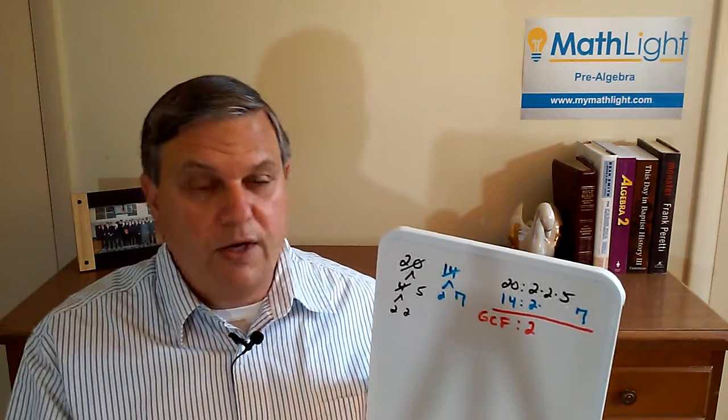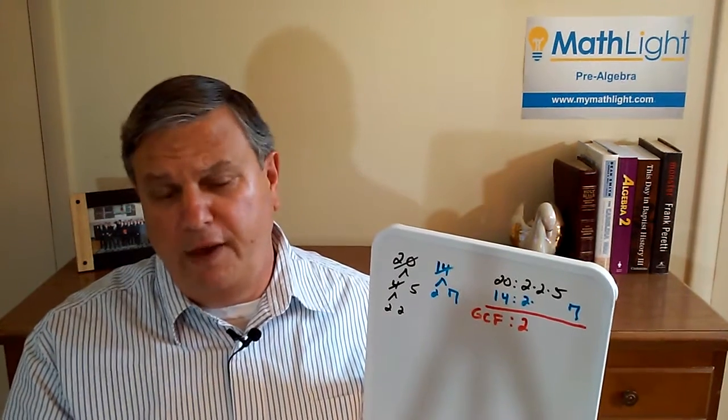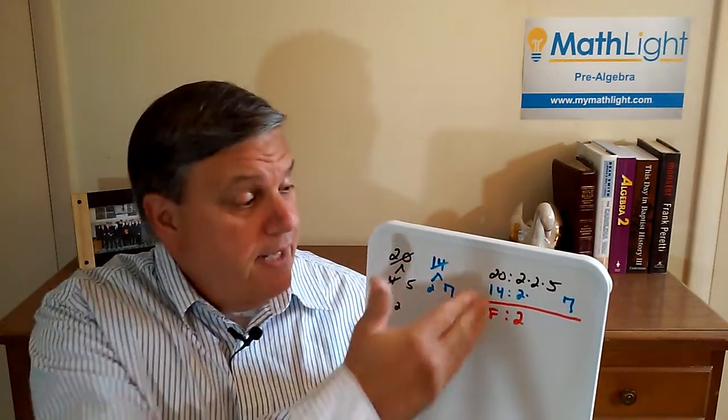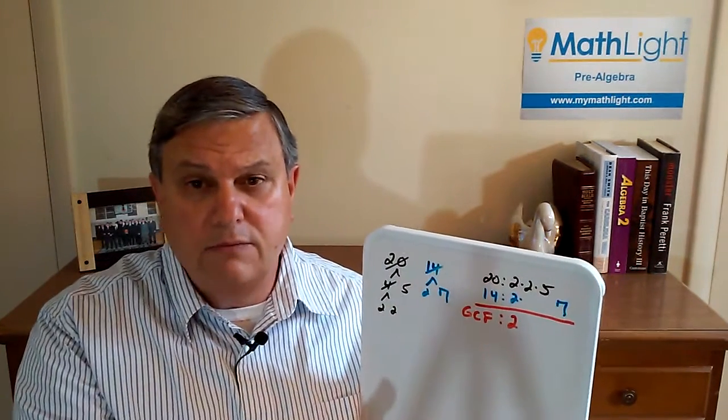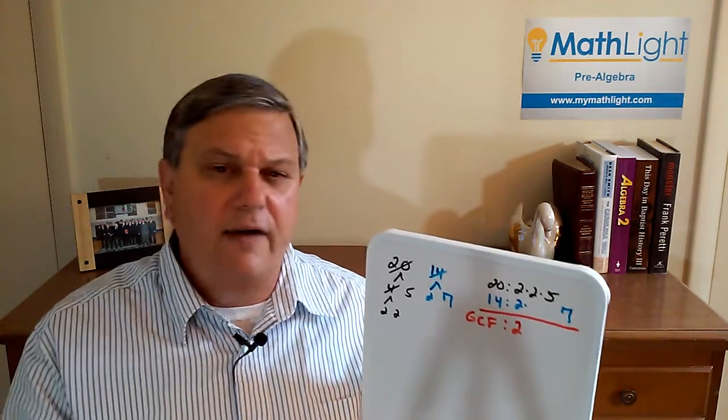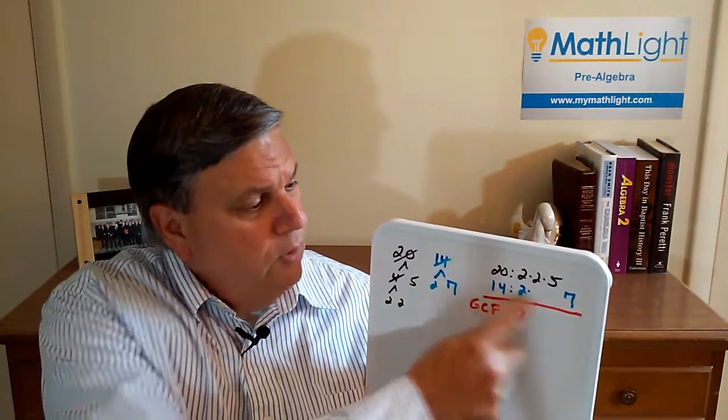So you've got the GCF. You're going through, they factor the 20, factor the 14. You have your chart, and of course I'm careful with my students. I tell them they need to line up their factors in nice vertical lines. Twos go in two columns, threes go in three columns, fives in five columns.